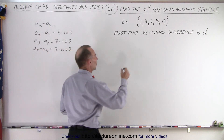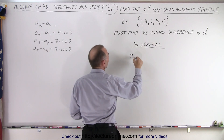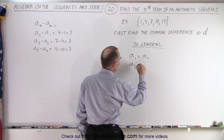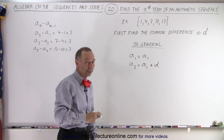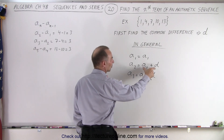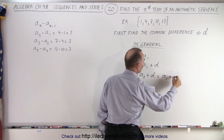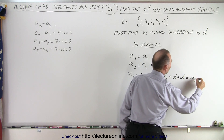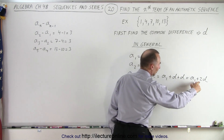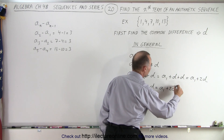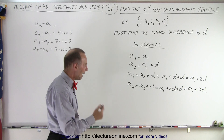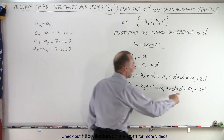Now we're going to do this in general. A sub 1 is simply a sub 1. A sub 2 is equal to a sub 1 plus the common difference d, because it's simply d more than a sub 1. A sub 3 equals a sub 2 plus d, and since a sub 2 equals a sub 1 plus d, this gives us a sub 1 plus 2d. A sub 4 equals a sub 3 plus d, which is a sub 1 plus 3d. And following the pattern, a sub 5 equals a sub 1 plus 4d.